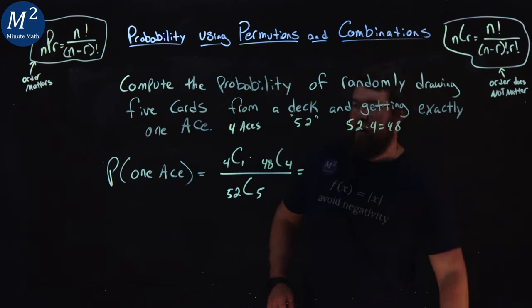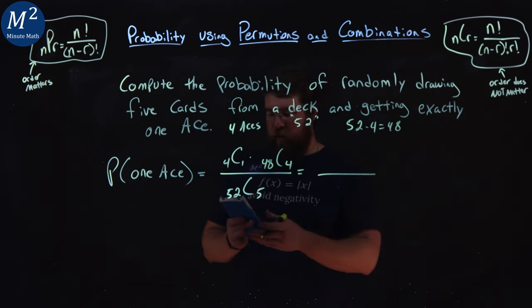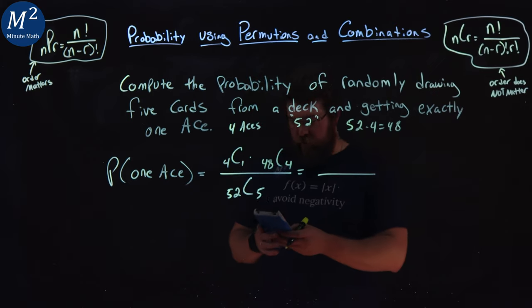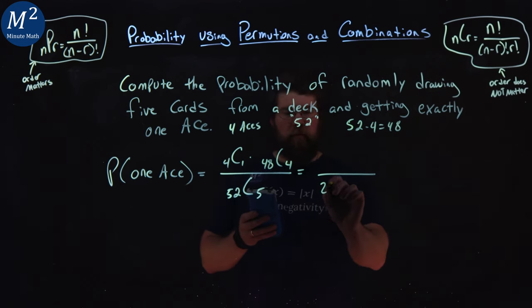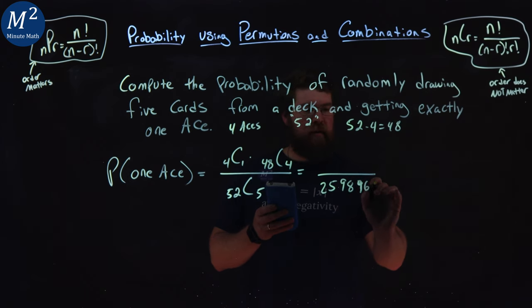So now we use our calculator. Let's use our NCR function here, or we can use the formula, but I'm going to use the NCR function for this video. 52 choose 5. We have 2,598,960.